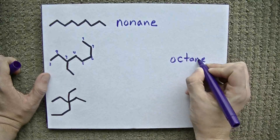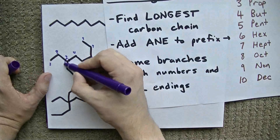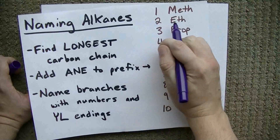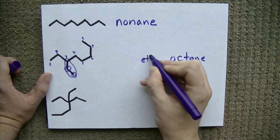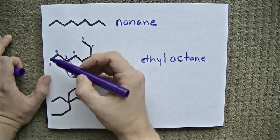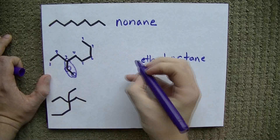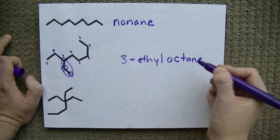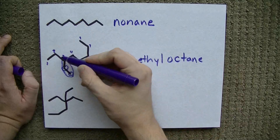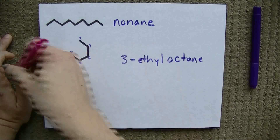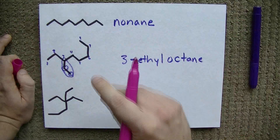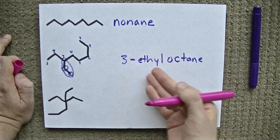I'm leaving a little bit of room here to show you what we do with the branches. We have a branch here — it is one, two carbons long, so we're going to call it an ethyl. And we have to tell people where the branch is. It's on carbon one, two, three of the original octane. We call it 3-ethyloctane. You might notice that we could have numbered the octane the other way, making this 6-ethyloctane. But when you have a choice like that, we prefer to go with the lower number. So this is 3-ethyl, not 6-ethyl.